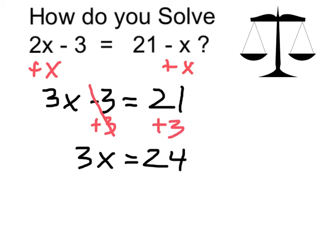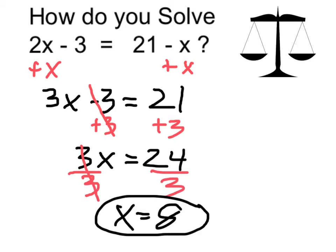It gives me 3x equals 24, and to get x itself, I'm going to divide by 3. Again, I keep my balance by dividing both sides by 3. 24 divided by 3 is 8, so I propose the answer is x equals 8.